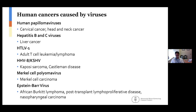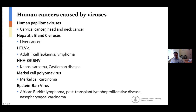Here's a general summary of human cancers and the viruses that cause them. Human papillomaviruses can cause cervical cancer and head and neck cancer. Hepatitis B and C viruses can cause liver cancer. HTLV-1 can cause adult T-cell leukemia and lymphoma. HHV-8 or KSHV can cause Kaposi's sarcoma. Merkel cell polyomavirus is associated with Merkel cell carcinoma. And Epstein-Barr virus, a cause of infectious mononucleosis, has been associated with cancers such as African Burkitt lymphoma, nasopharyngeal carcinoma, and post-transplant lymphoproliferative disease, which is occasionally seen in patients that have received a transplant.